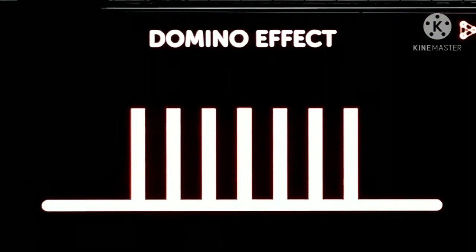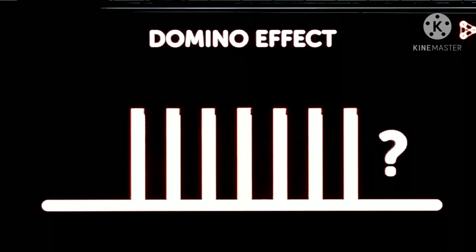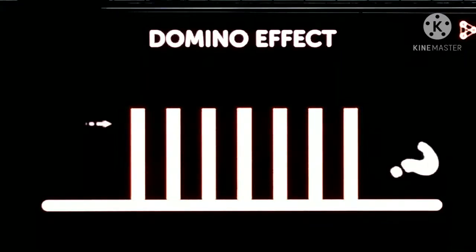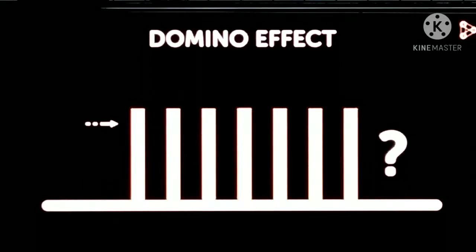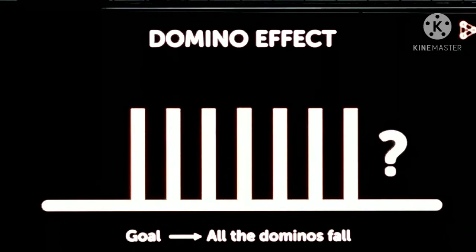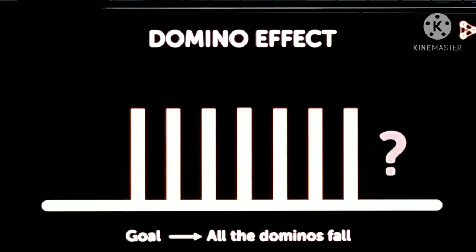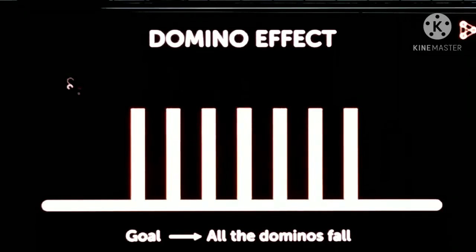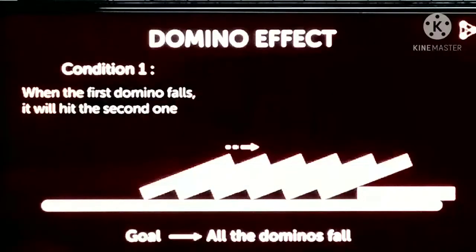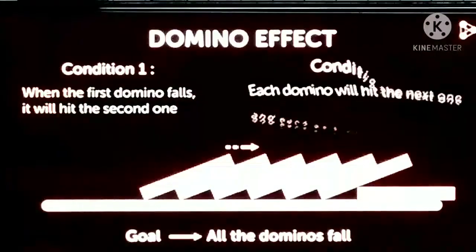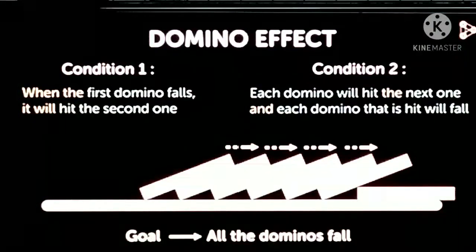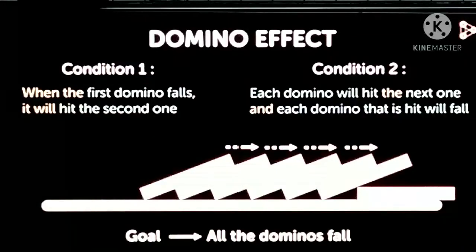Look at this. There are a number of piles here. In this domino effect, the first thing is you have to fall down a particular domino. In this particular slide, the goal is for all the dominoes to fall. So in that case, your condition 1 is: when the first domino falls, it will hit the second one automatically. Each domino will hit the next one and each domino will fall.